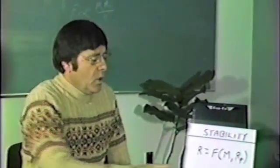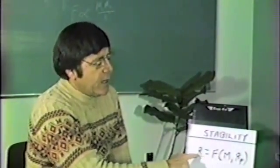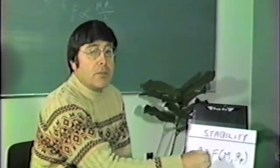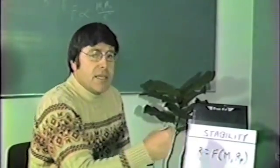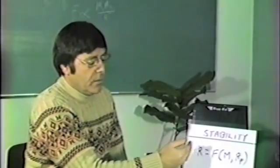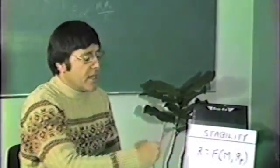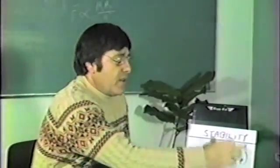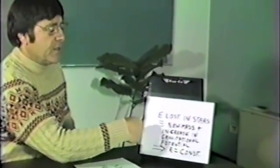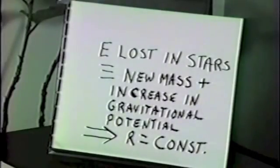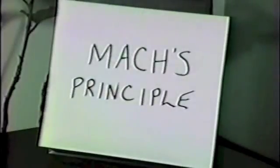Because what this stability problem was — it said that the radius of the universe is a function of the gravitational potential produced by the mass and the radiation pressure. And so what happens is that as the radiation converts to longer and longer wavelengths, it increases the gravitational potential and everything balances out. So we don't have to have an expanding universe — everything becomes stable and we've solved the problem. In fact, what you get is that the energy lost in the stars by radiation is exactly equal to the amount of new mass created, plus the increase in gravitational potential, which causes the radiation to be constant. This is a very, very nice idea from the standpoint of Mach's principle.